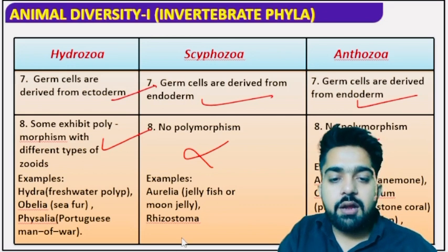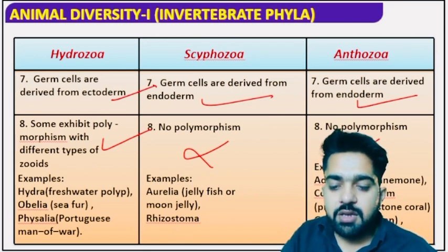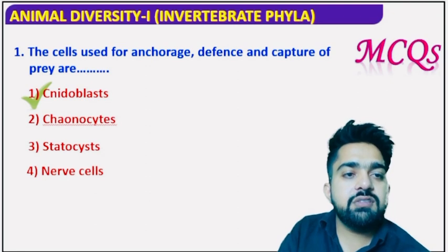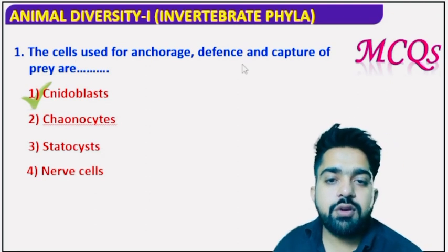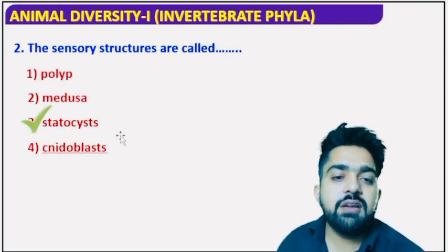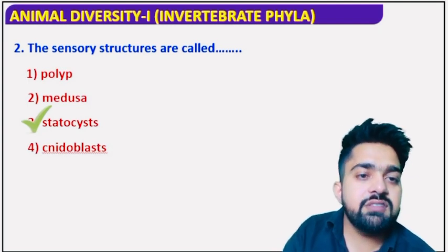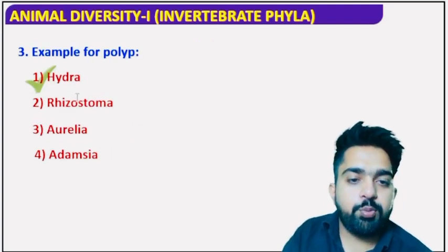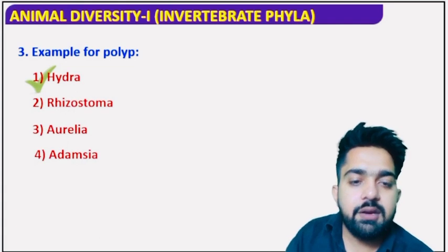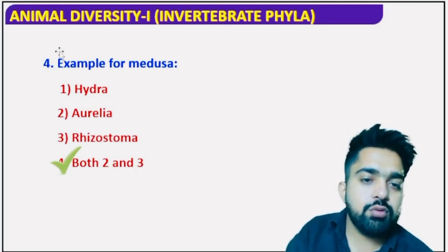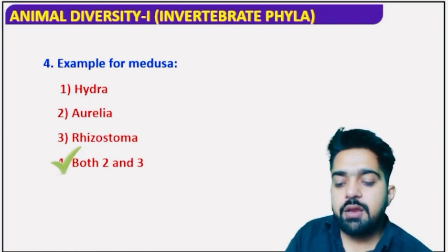For Hydrozoa, examples include Hydra. For Scyphozoa, examples are Aurelia. For Anthozoa, examples are sea anemones. Quick review cautions: the cells used for anchorage, defense, and capture of prey are cnidoblasts. The sensory structures are called statocysts. Example for polyp form: Hydra. Example for medusa form: Aurelia and Rhizostoma both show the medusoid form.